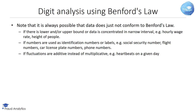Not every dataset has to conform to Benford's Law, and many will never do. Examples include cases where there is a lower and/or upper bound, or data is concentrated in a narrow interval — for example, hourly wage rate or height of people. Also excluded are numbers used as identification numbers or labels, such as social security numbers, flight numbers, car license plate numbers, and phone numbers, or cases where fluctuations are additive instead of multiplicative, such as heartbeats on a given day.